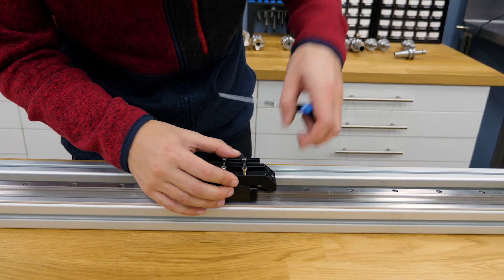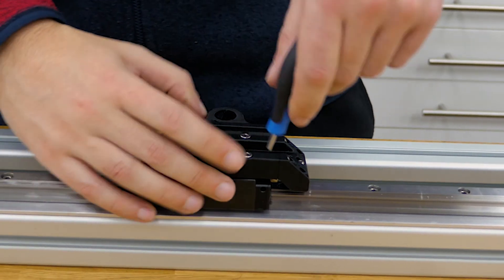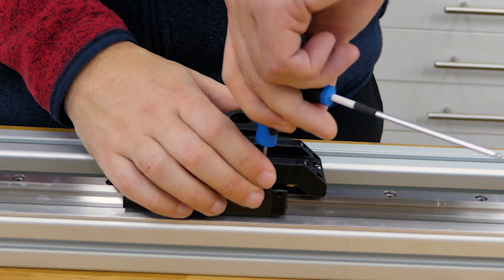Next I am fixing the guide rail block to the car. This is simply done with four M4 screws.